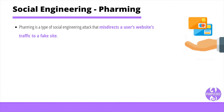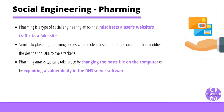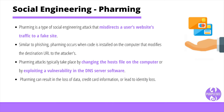Pharming is a type of social engineering attack that misdirects a user's website traffic to a fake site. Similar to phishing, pharming occurs when code is installed on the computer that modifies the destination URL to the attacker's. Pharming attacks typically take place by changing the host file on the computer or by exploiting a vulnerability in the DNS server software. Pharming can result in data loss, credit card information theft, or lead to identity loss.